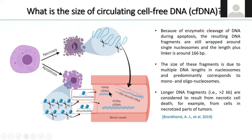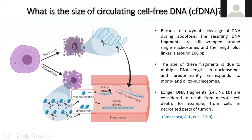We usually find a peak at 166 base pairs, and also at 332 base pairs. Longer fragments - more than 2 kb - are usually considered necrotic cell fragments and are present in necrotic tumors. We can evaluate these particles using the size of the DNA.